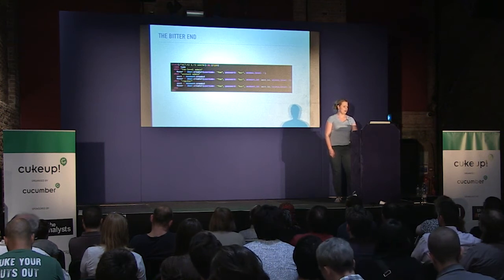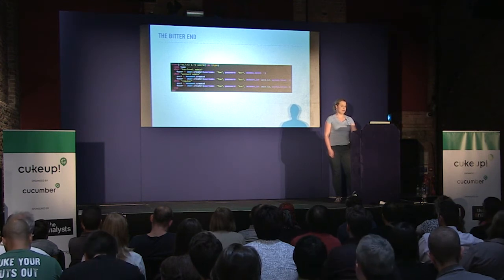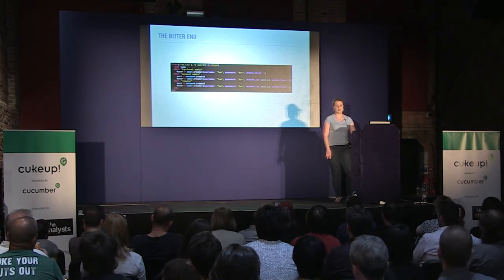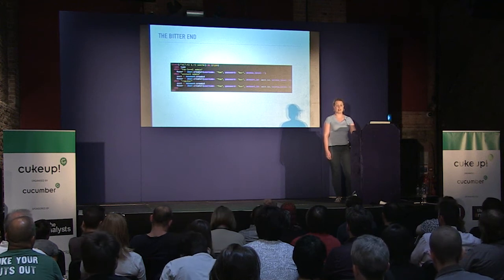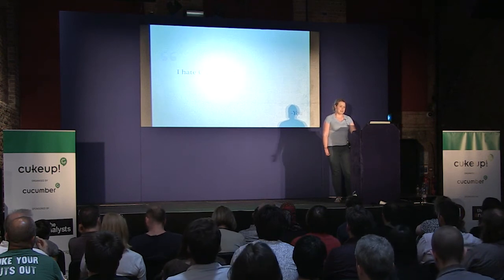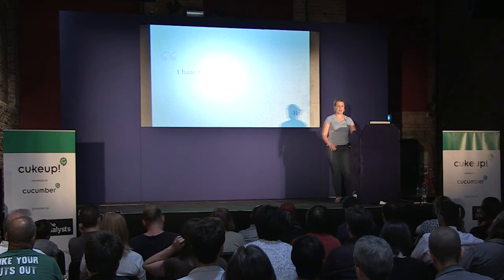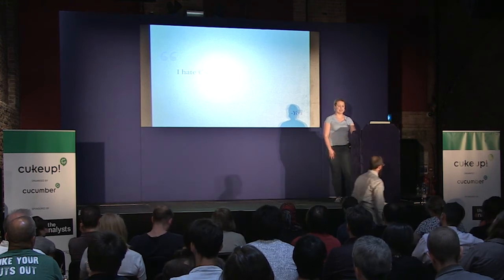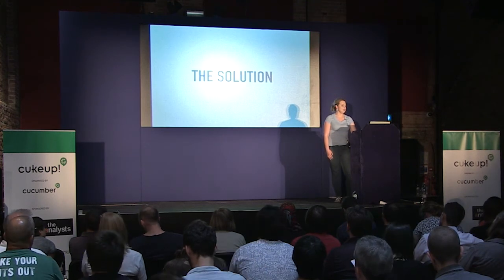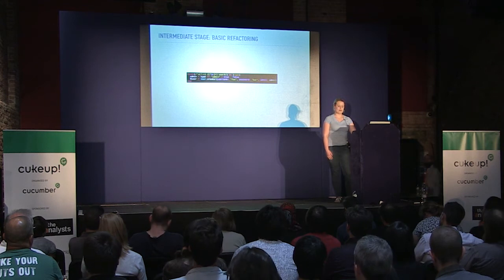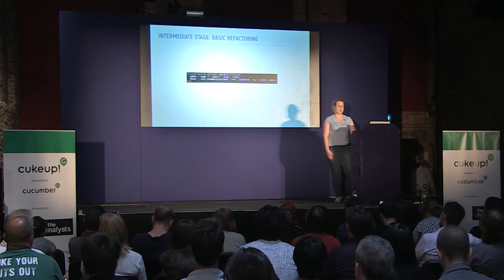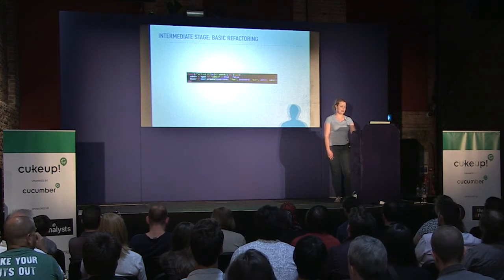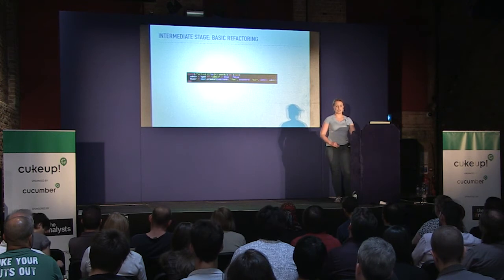Things start to get really hairy when we find that we need multiple levels of admins. In this application, we imagine that we have accounts associated with lower level users — not only global admins who have access to all accounts, but also account admins who have access to settings and users associated with their account only. That leads to a step definition with top level admin, account admin, and regular user cases. So what are we going to do about this?